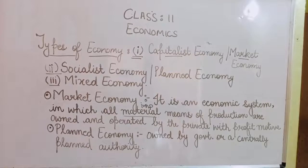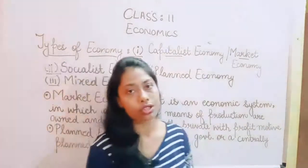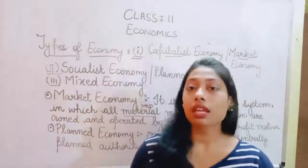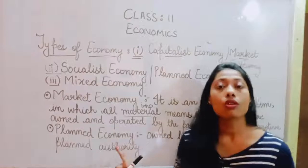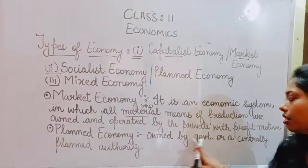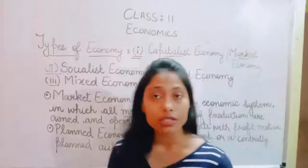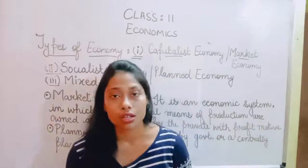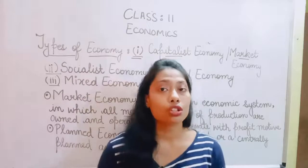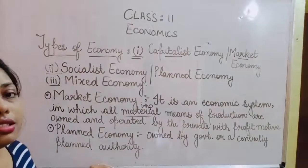The second type of economy is your planned economy, also called socialist economy. By the name it is clear that it is for the society at large, and when it is for the society at large, it is not made with the purpose of profit motive. So this is not owned by a private sector — it is owned by the public sector, the government, or a centrally planned authority. Centrally planned authority means all the decisions are taken at the central level. We distribute the work but not the authority.